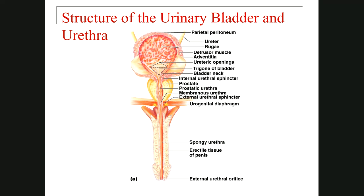The first part is the prostatic urethra. The next part is the membranous urethra, located in the wall of the body. The last part is the penile urethra or spongy urethra, located in the penis. There is also the internal urethral sphincter, the external urethral sphincter, and the external urethral orifice. Don't confuse orifice and sphincter — sphincter means valve, and orifice is the opening.